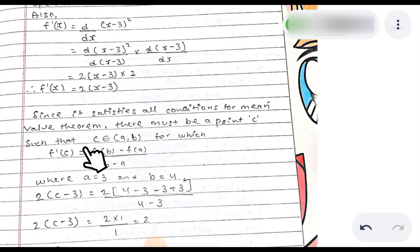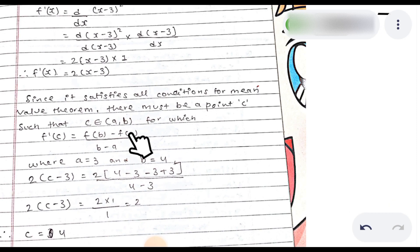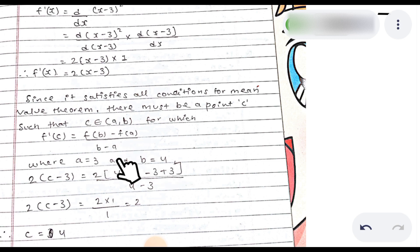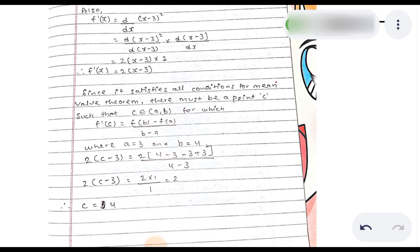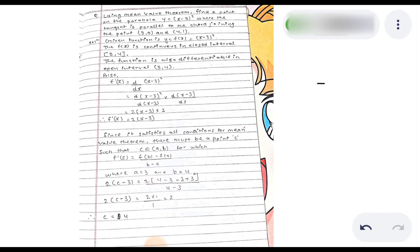Setting 2(c−3) equal to the slope gives us the value of c. If you want to learn more, I will upload a video. Thank you so much for watching.